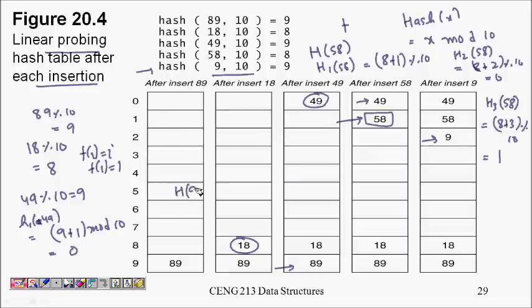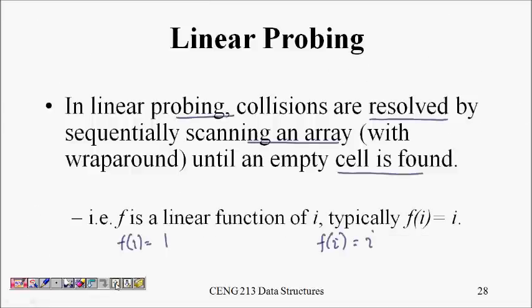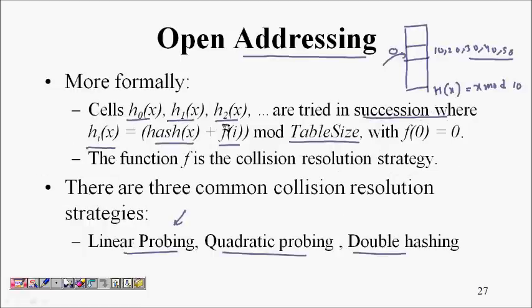Insert 9: h(9) = 9, which is filled. h_1(9) = (9+1) mod 10 = 0, filled. h_2(9) = (9+2) mod 10 = 11 mod 10 = 1, filled. h_3(9) = (9+3) mod 10 = 12 mod 10 = 2, which is free, so 9 is placed at index 2.